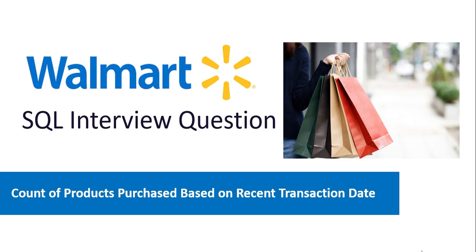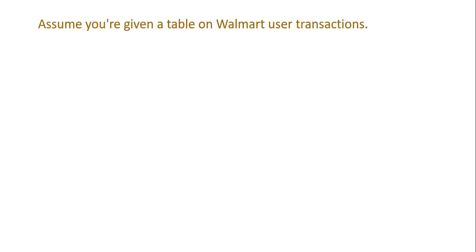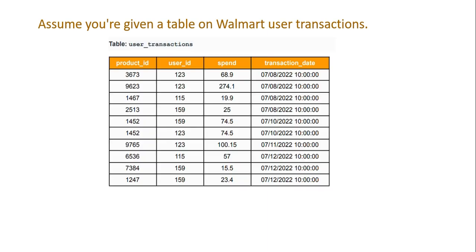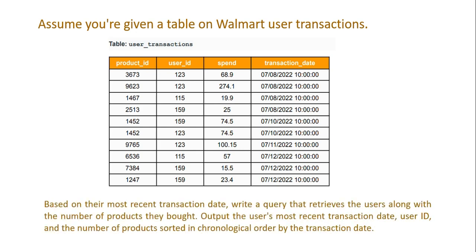Today we have another SQL question asked on Walmart. The table is called user_transactions with the following columns: product_id (the id of the product purchased), user_id, spend (the amount spent), and transaction_date (the date and time of the transaction). Based on the user's most recent transaction date, we have to write a query that retrieves the users along with the number of products they bought — outputting the most recent transaction date, user_id, and product count sorted in chronological order.